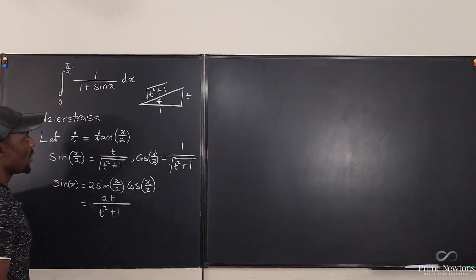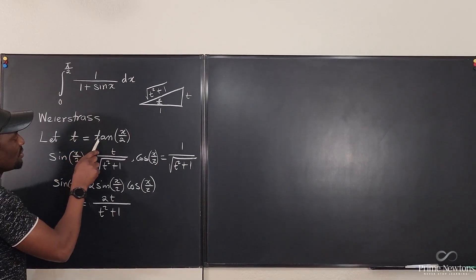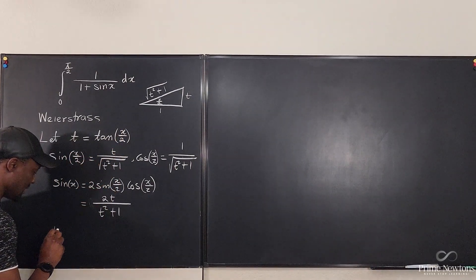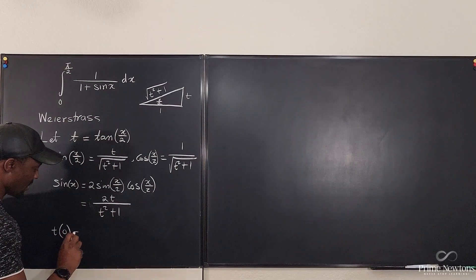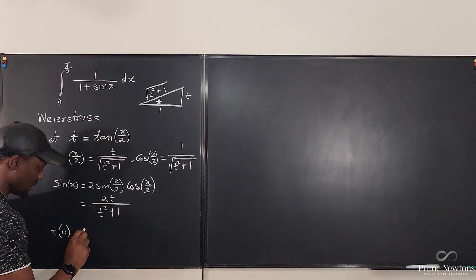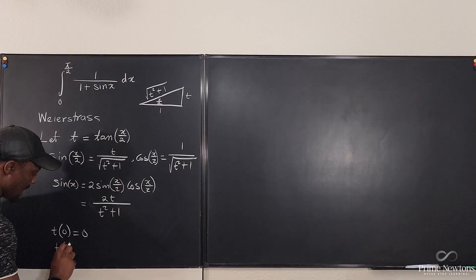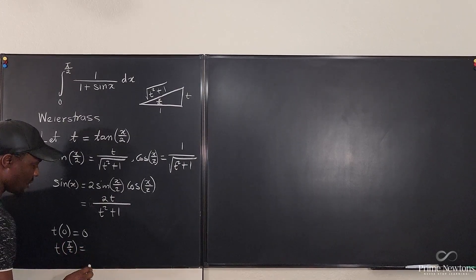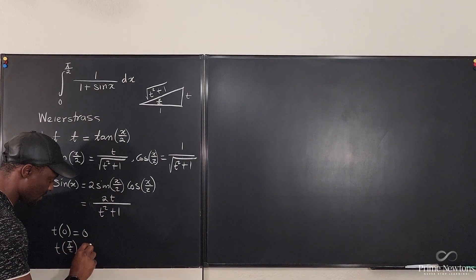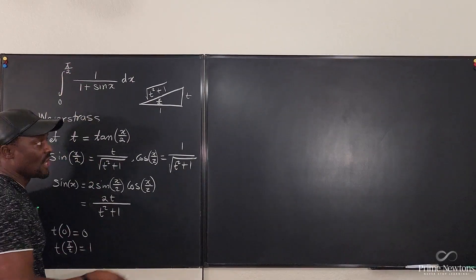Since we've made a t-replacement, we need to change the limits. We said t = tan(x/2). When x equals 0, t = tan(0/2) = tan(0) = 0. When x equals π/2, t = tan(π/4) = 1. So the new limits of integration are 0 to 1.